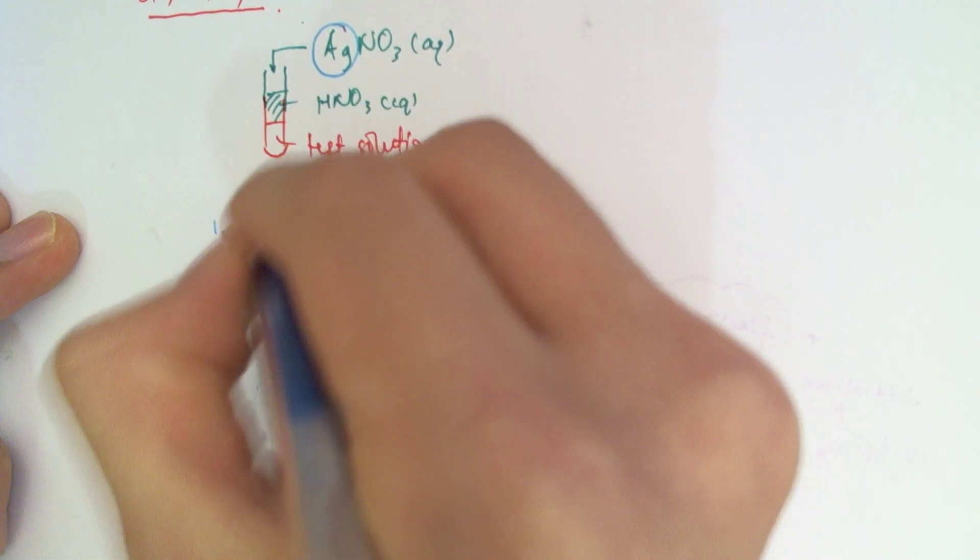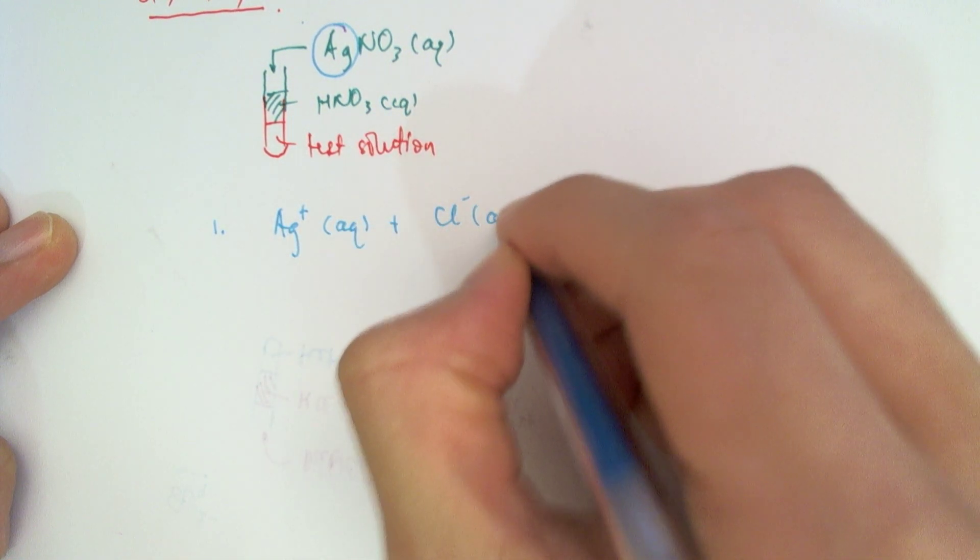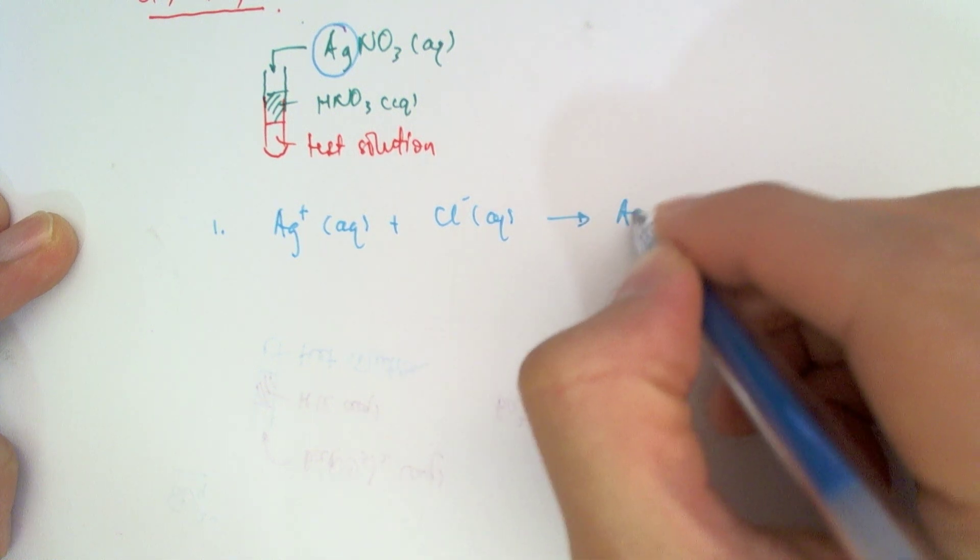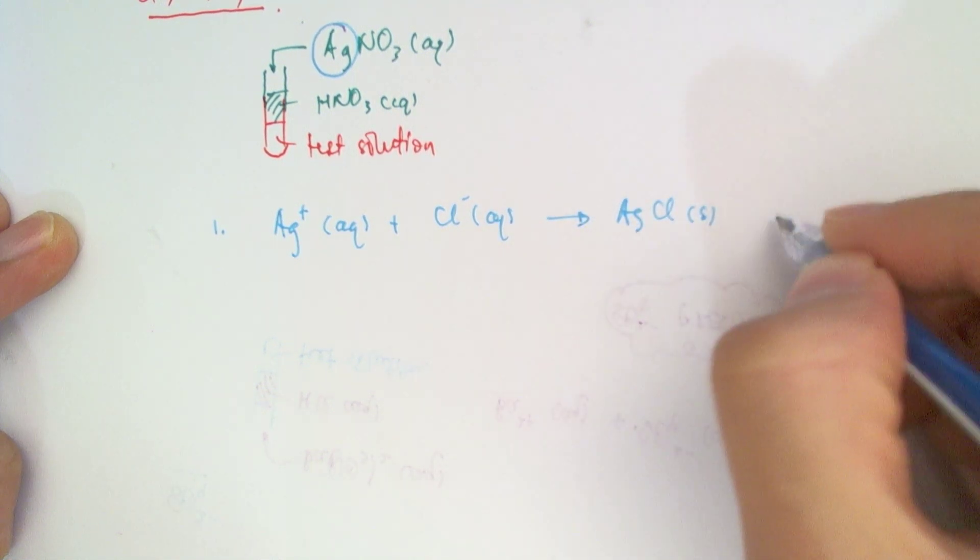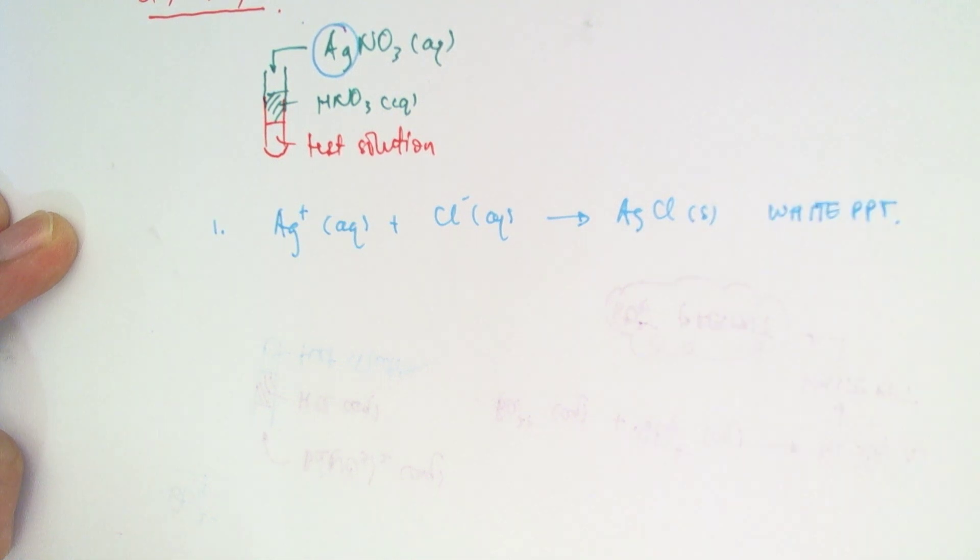First up is chlorides. The silver ions will react with the chloride ions to give me a silver chloride precipitate. And this is white in color. So that confirms chloride present.